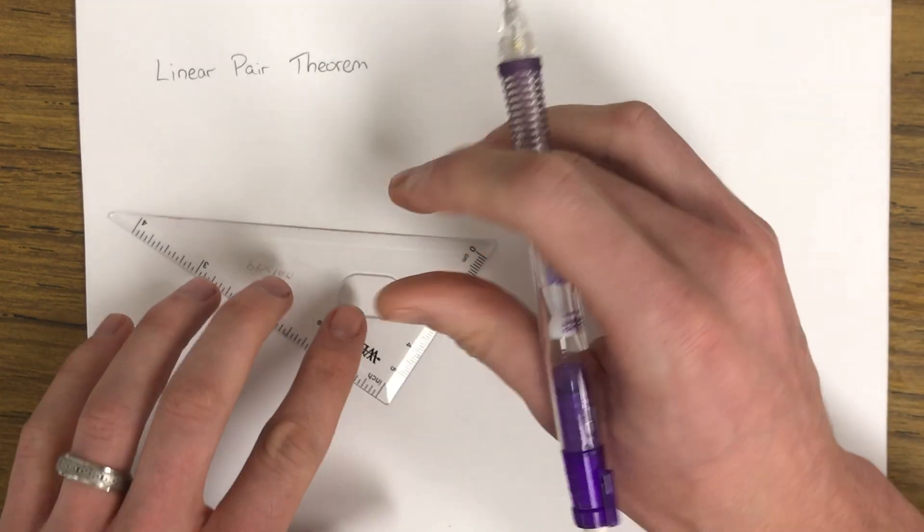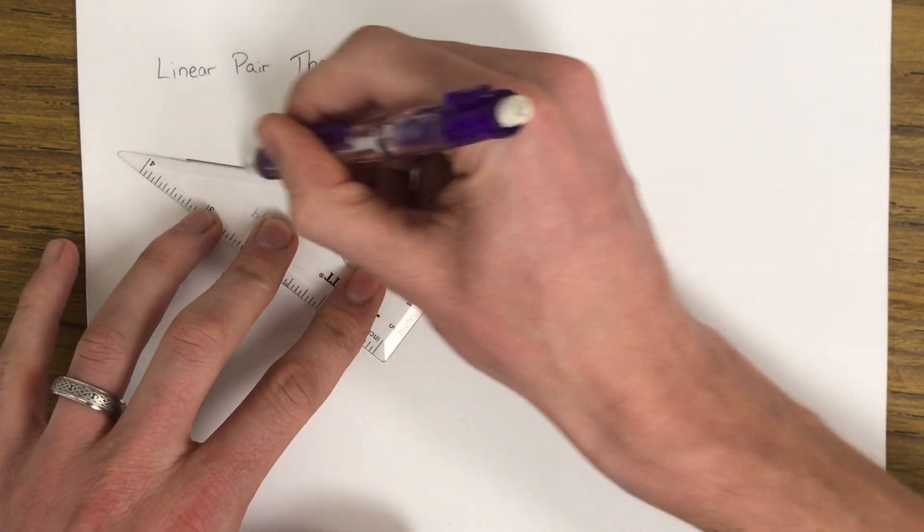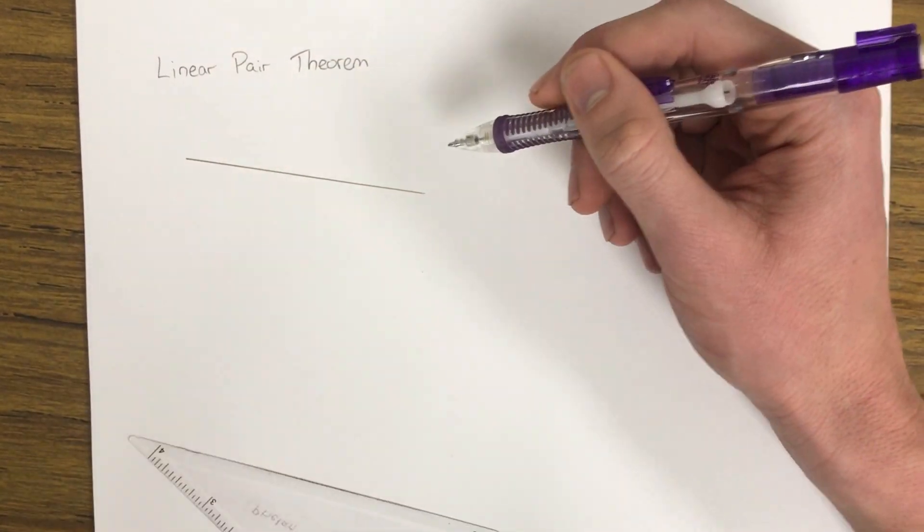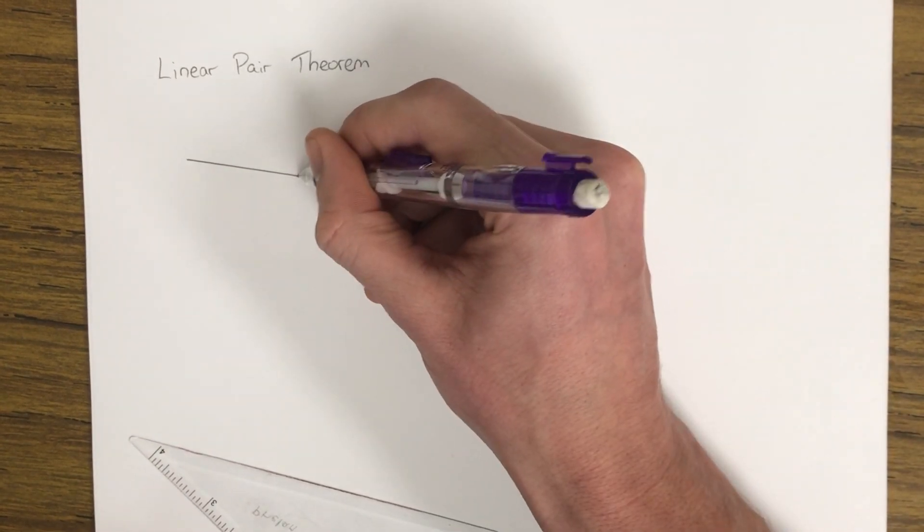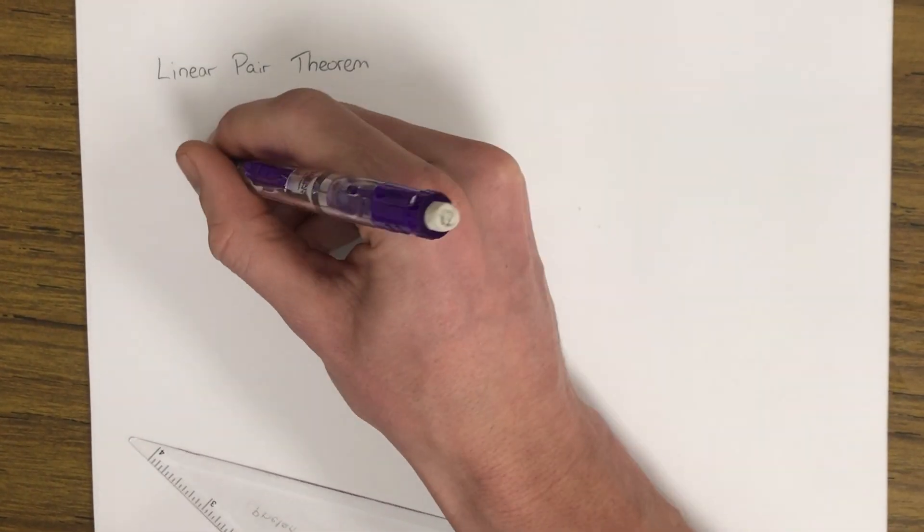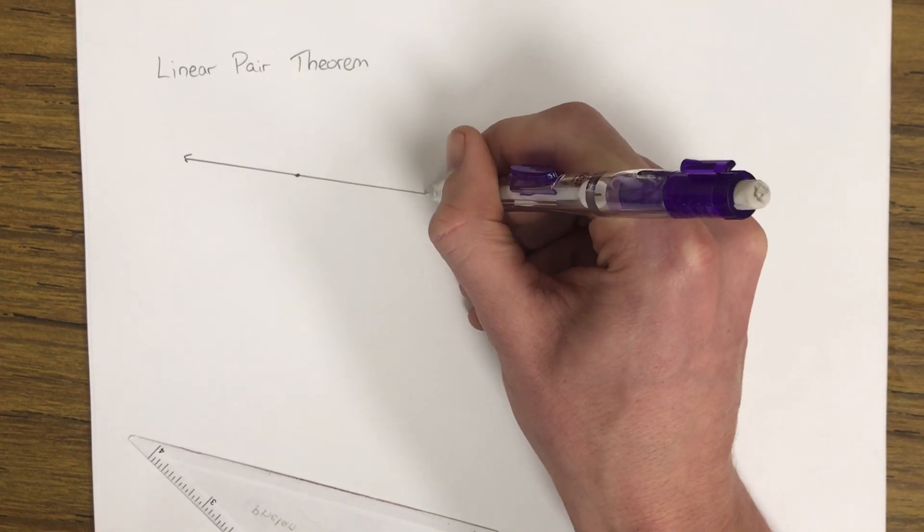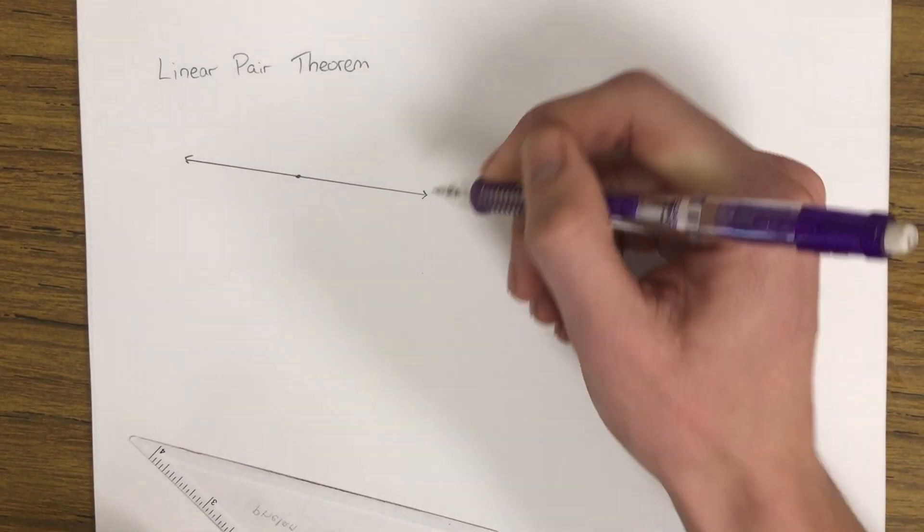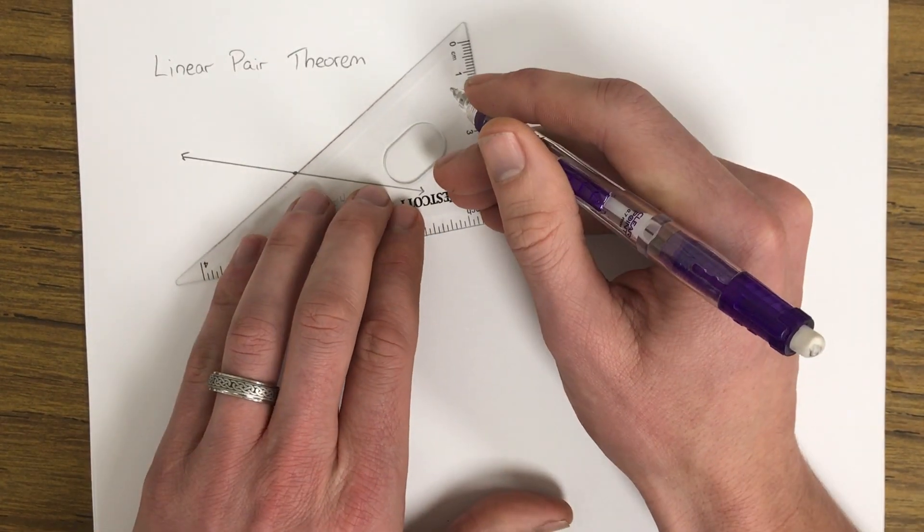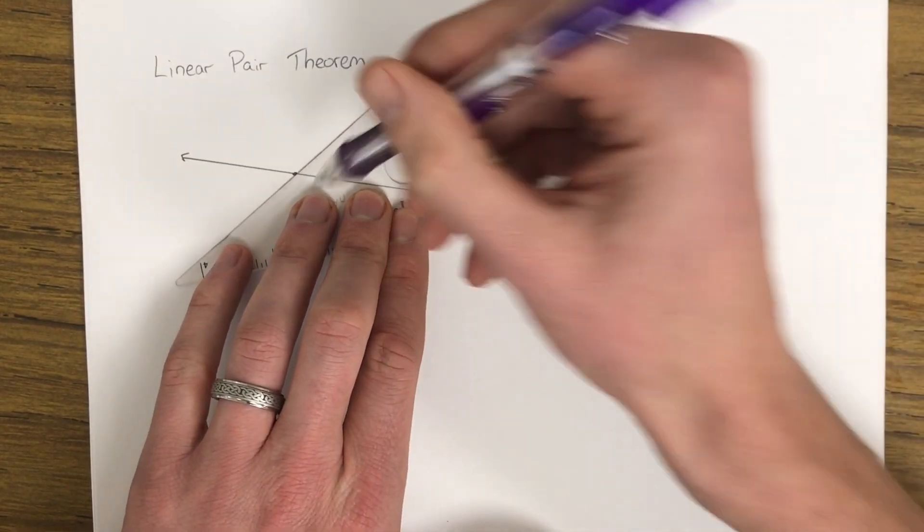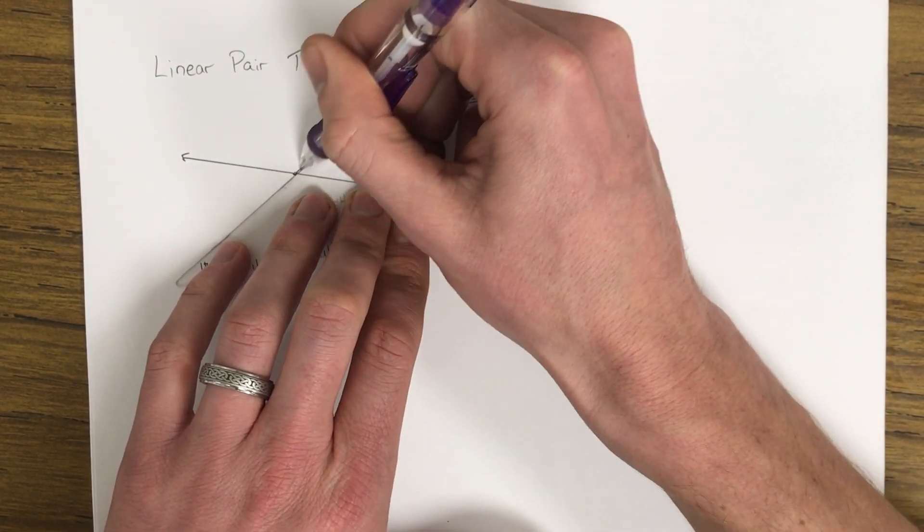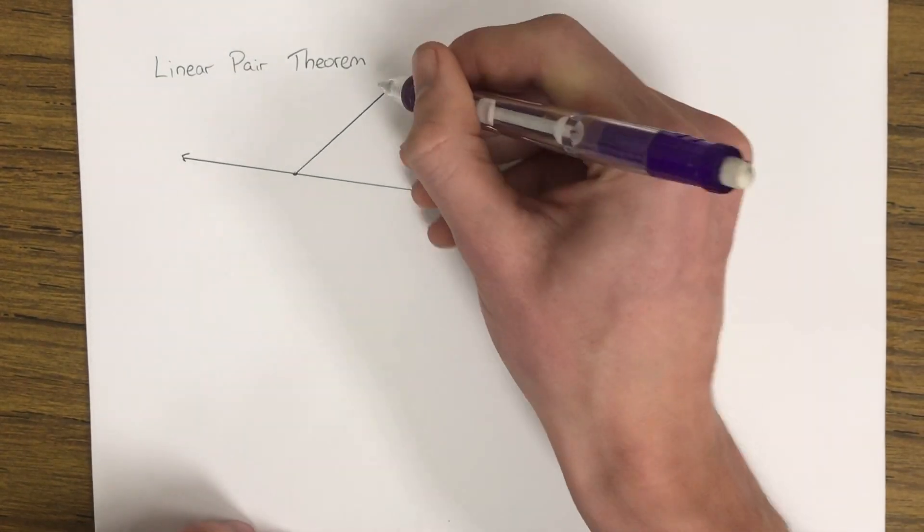So a linear pair is when you have a straight angle, so a straight angle being an angle made on a straight line. So we have a line going in either direction and then we've also got a second ray segment line, whatever it is, which intersects with our original line.